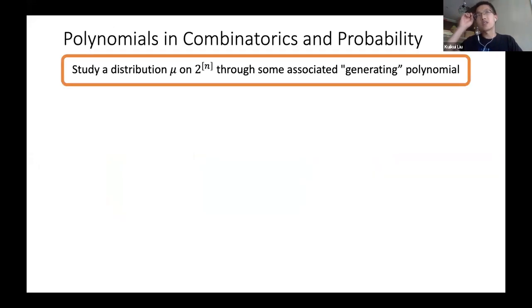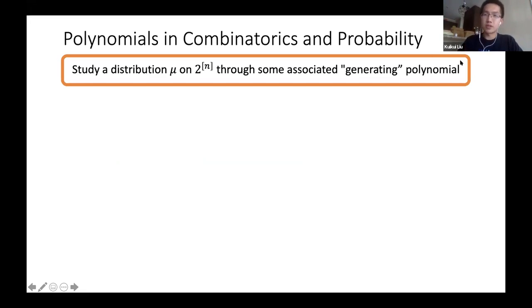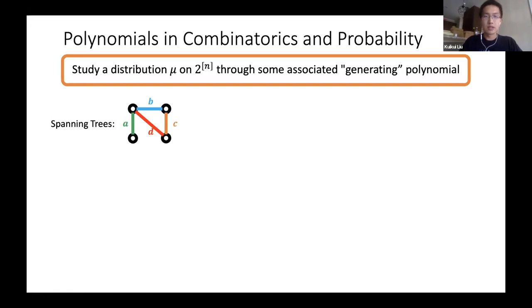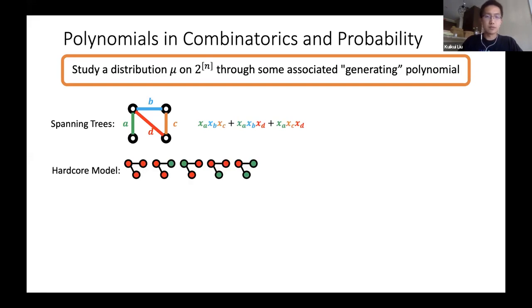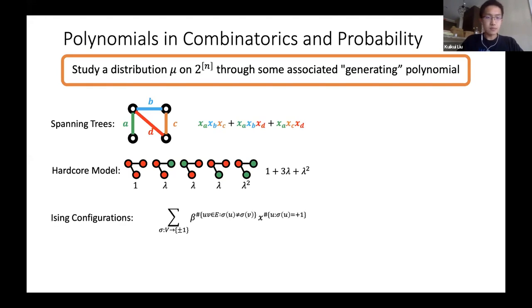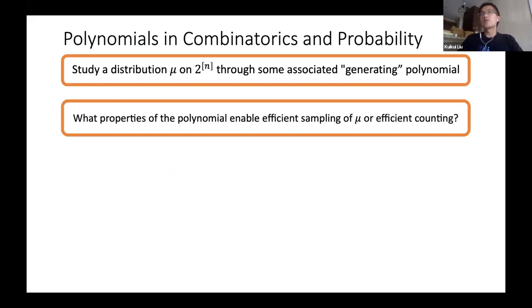I would summarize one of the really important themes of the program and of the field of geometry upon numbers as saying that if you want to study some discrete probability distribution mu — for instance, on the collection of subsets of one through n — it's very fruitful to study analytic properties of some associated generating polynomial. We do this a lot. For instance, for spanning trees you might consider the multivariate spanning tree polynomial, for the hardcore model we have the associated independence polynomial.